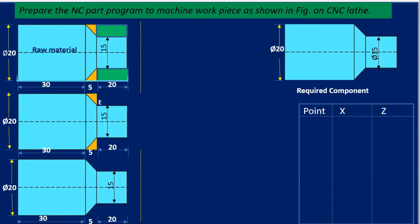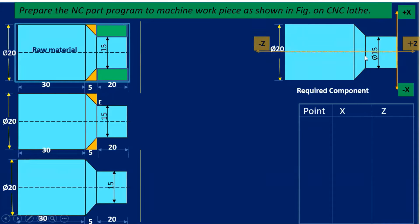Before writing the programs, it is very important to understand the coordinate system. Along the length of the job, consider the Z axis, and along the diameter of the job, consider the X axis. When the tool moves away from the face of the work piece towards the right, coordinates are positive along Z. When the tool moves left towards the spindle, coordinates are negative along Z. For X, moving away from the operator is positive; moving towards the operator is negative.